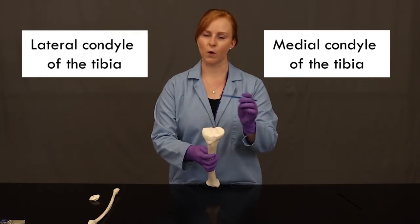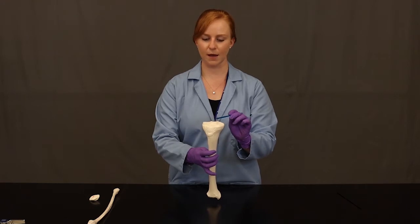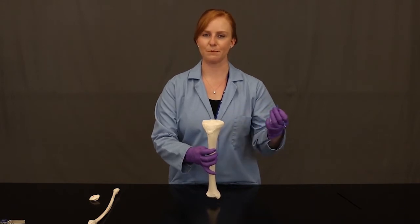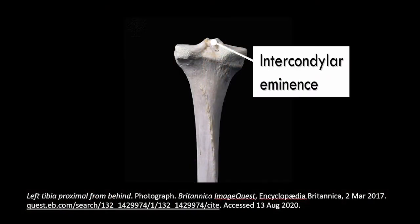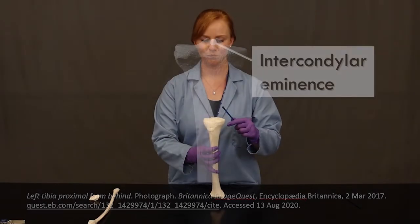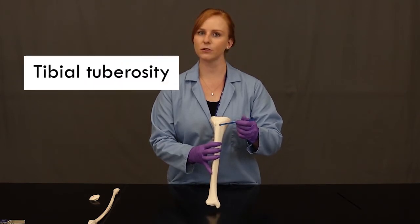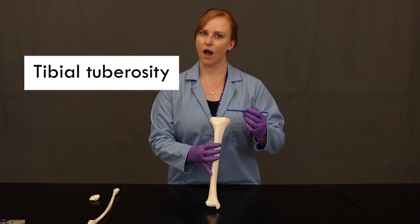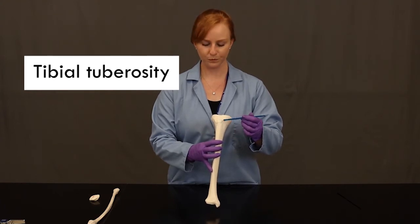In between those condyles, we have this rough projection in the center that's coming up and looks kind of like a crown — there are multiple little pointy areas. A crown would be on an important monarch, and you might call a monarch your eminence, so this pointy area is called the intercondylar eminence — it is between the condyles and is that pointy area like a crown. Moving farther down, right below the head, we have this big rough area called the tibial tuberosity. That's where the patellar ligament is going to connect, linking the tibia to the patella and beyond to the large quadriceps muscles of your thigh. And then we have this sharp line along the front of the tibia — this is the anterior crest, or anterior border of the tibia.